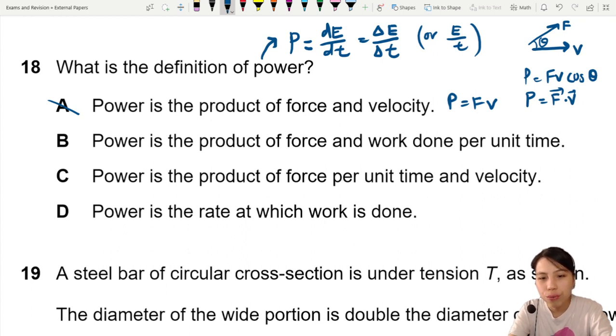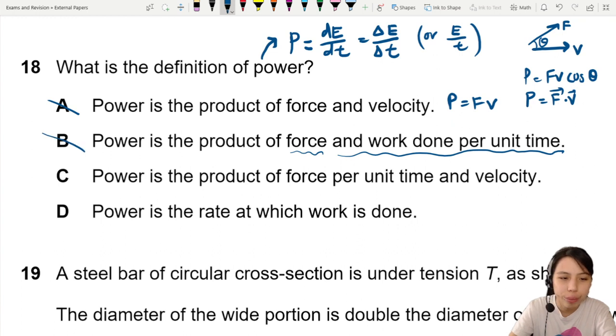B says product of force and work done per unit time. What? Why is it product of force and work done per unit time? Very strange. I don't know what's happening.